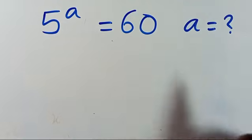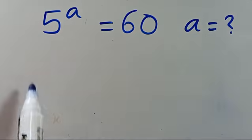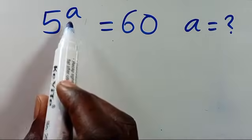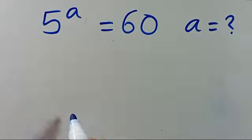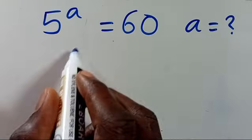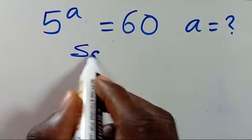What is the value of A, given that 5 to the power of A equals 60? Let's go to the solution.